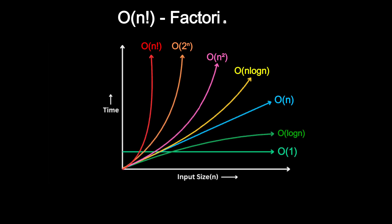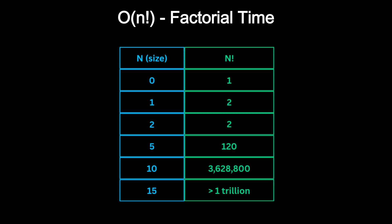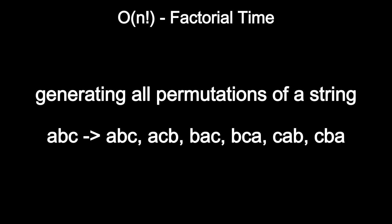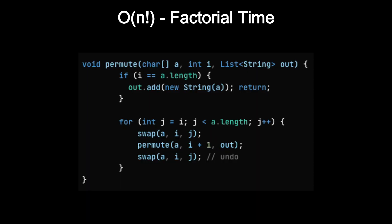And finally, factorial time. This is what you get when an algorithm tries every possible arrangement of a set of N elements. The number of possibilities grows faster than any other complexity we have seen. Even at N equals 15, the numbers are already in trillions, which makes it completely impractical to compute. A classic example of O(n!) is generating all permutations of a string. These kind of brute force solutions are mostly used for very small inputs.